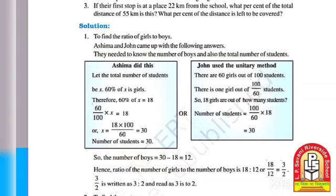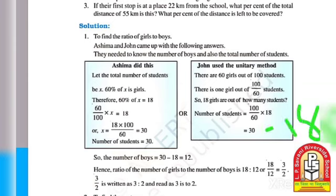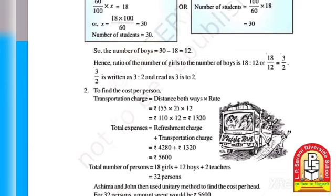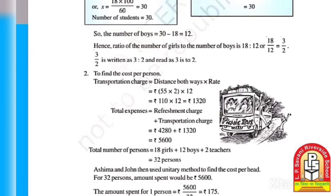Number of boys = total students − number of girls = 30 − 18 = 12. Hence the ratio of girls to boys = 18:12 = 3:2, because 6 × 3 = 18 and 6 × 2 = 12. So the ratio of girls to boys is 3:2.